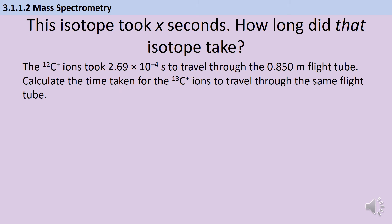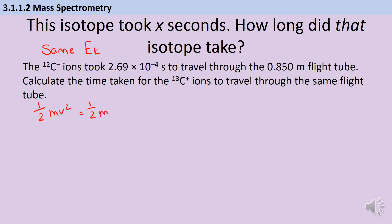The final type of calculation in this video is how we can use the time of flight of one isotope to calculate the time of flight of a second isotope. The key to unlocking this question is knowing that all ions in the mass spec are going to have the same amount of kinetic energy, and this means that I can set up a calculation where ½mv² = ½mv².